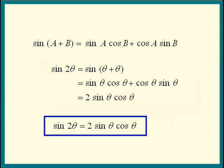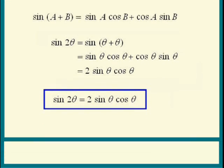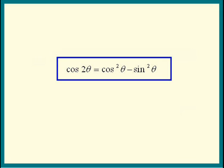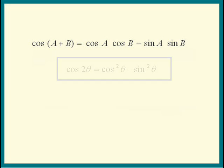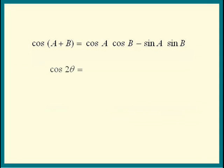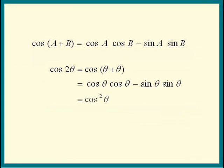Next, let's derive cosine 2 theta is cosine squared theta minus sine squared theta. Cosine of a sum is the cosine cosine minus the sine sine. So for cosine 2 theta, we have cosine theta plus theta is cosine theta cosine theta minus sine theta sine theta. Easy, right?